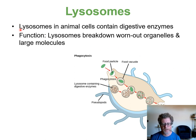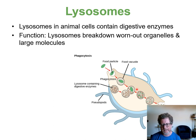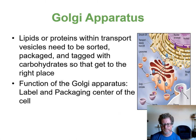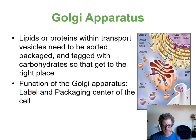Lysosomes are an organelle found in animal cells but not plant cells. They contain digestive enzymes that break things down — they can break down food particles or damaged organelles like a bad mitochondria. The Golgi apparatus is a labeling and sorting center: proteins made in the rough ER are labeled with a carbohydrate in the Golgi apparatus, then packaged and sent to the outside of the cell to be exported to where they function.